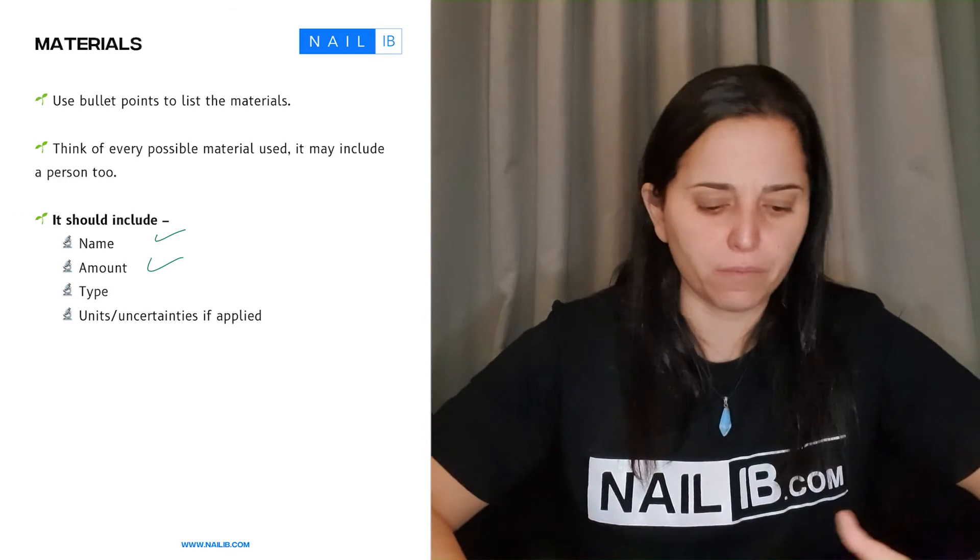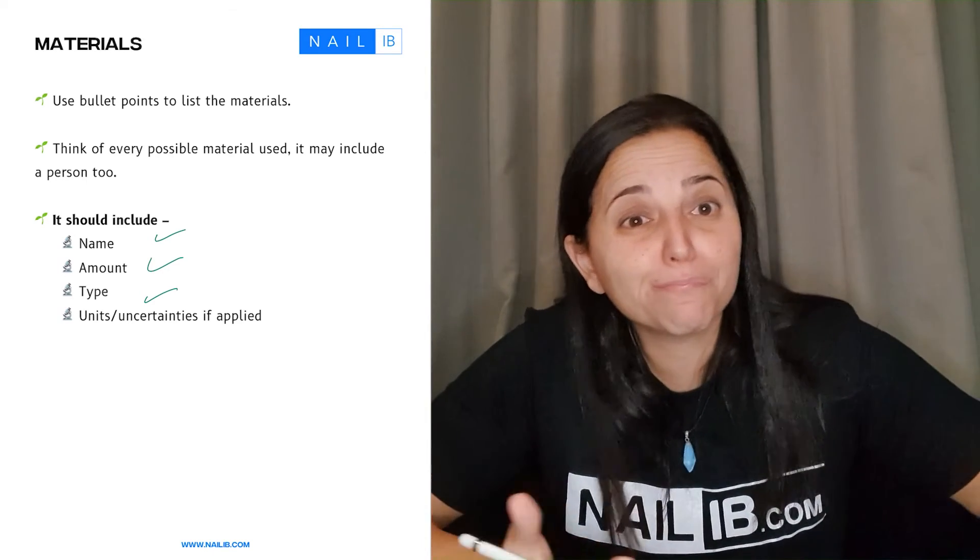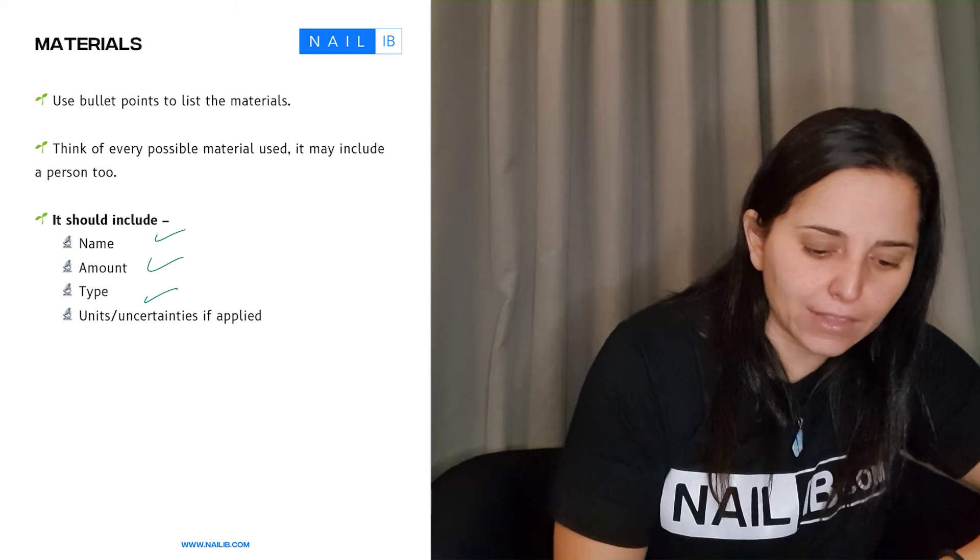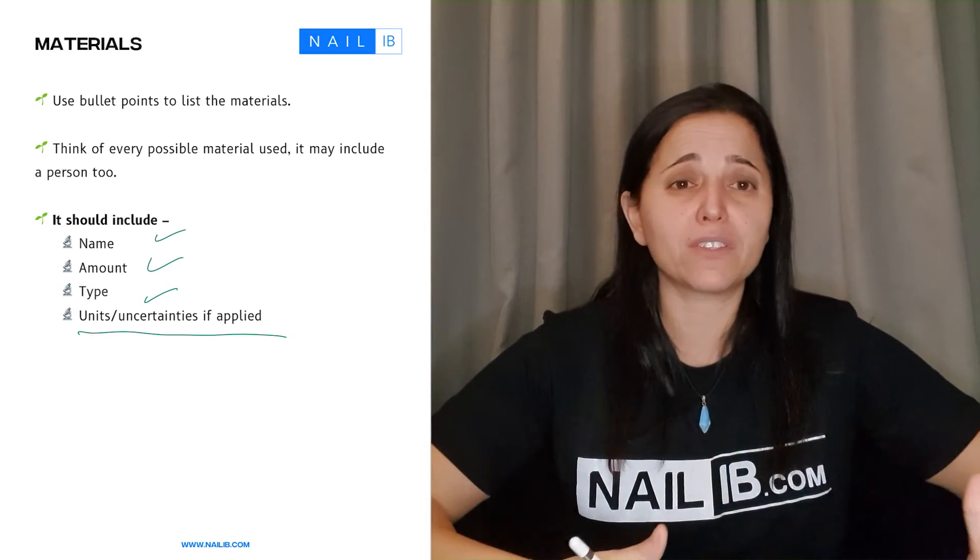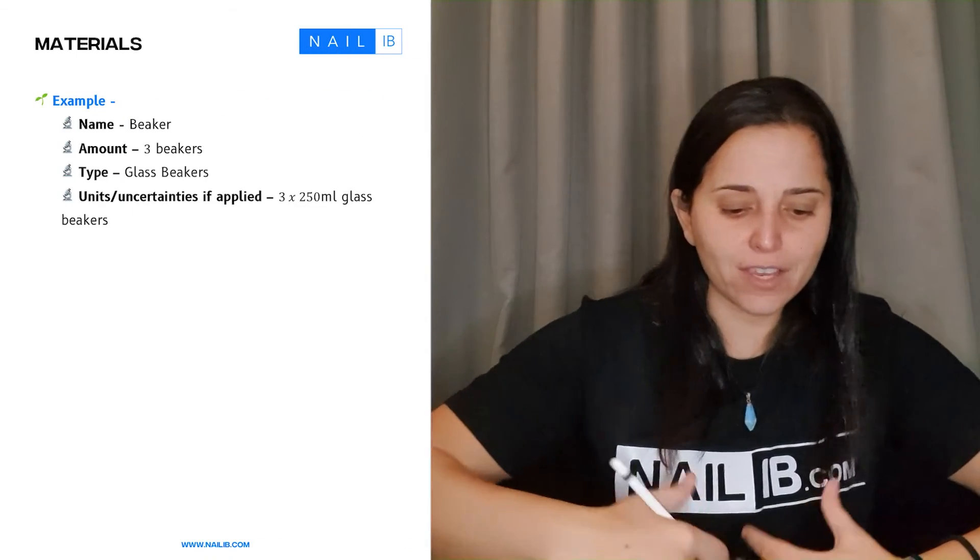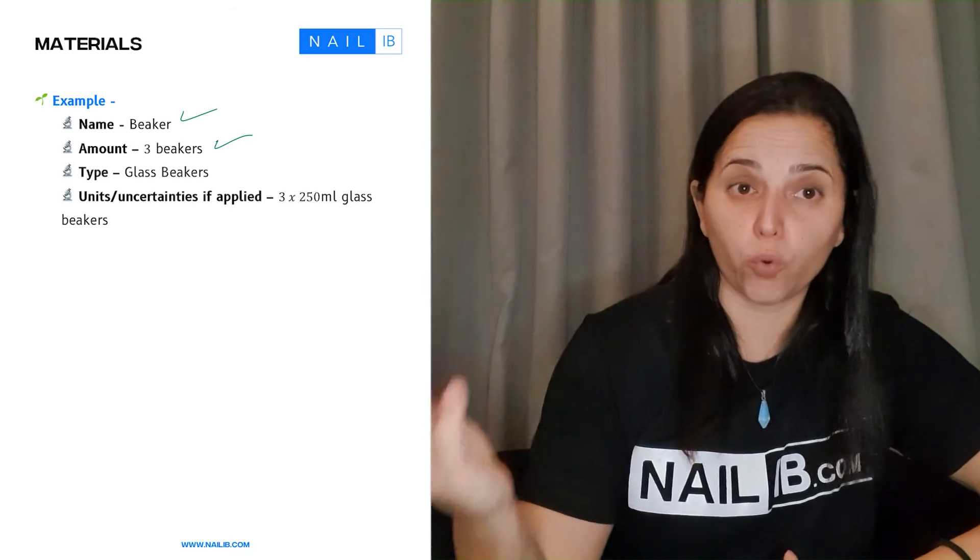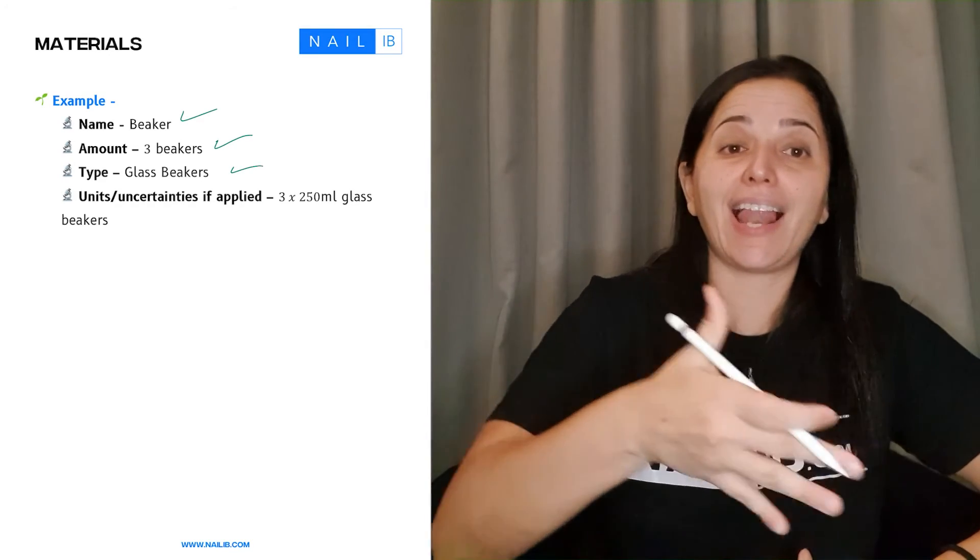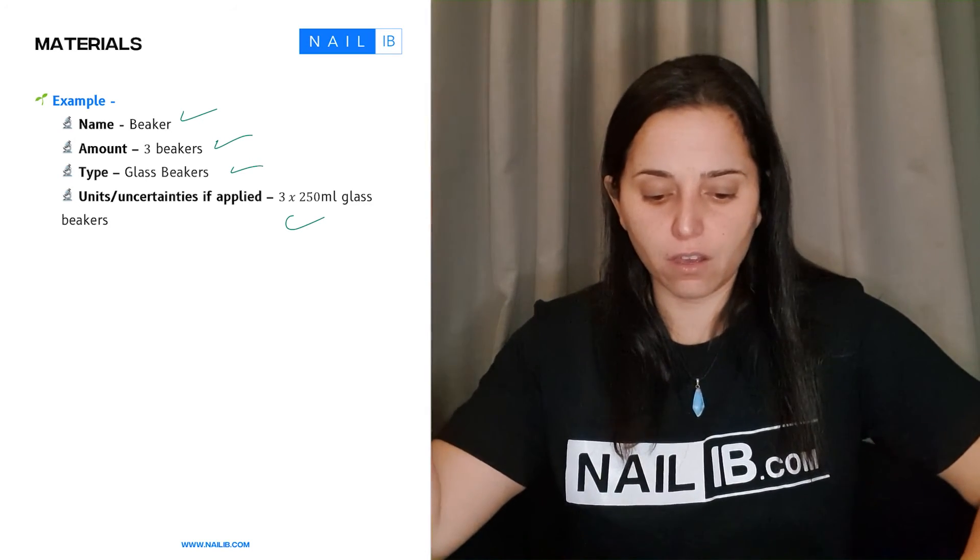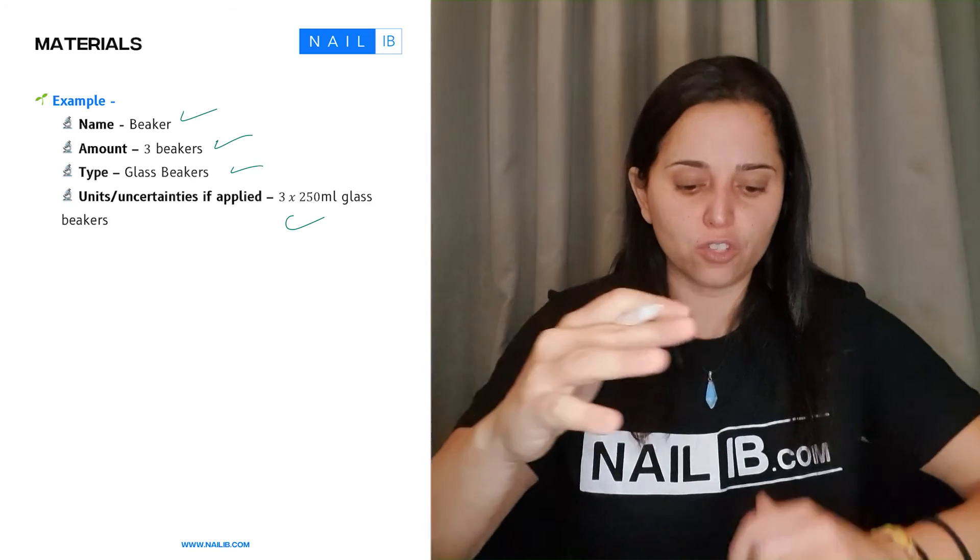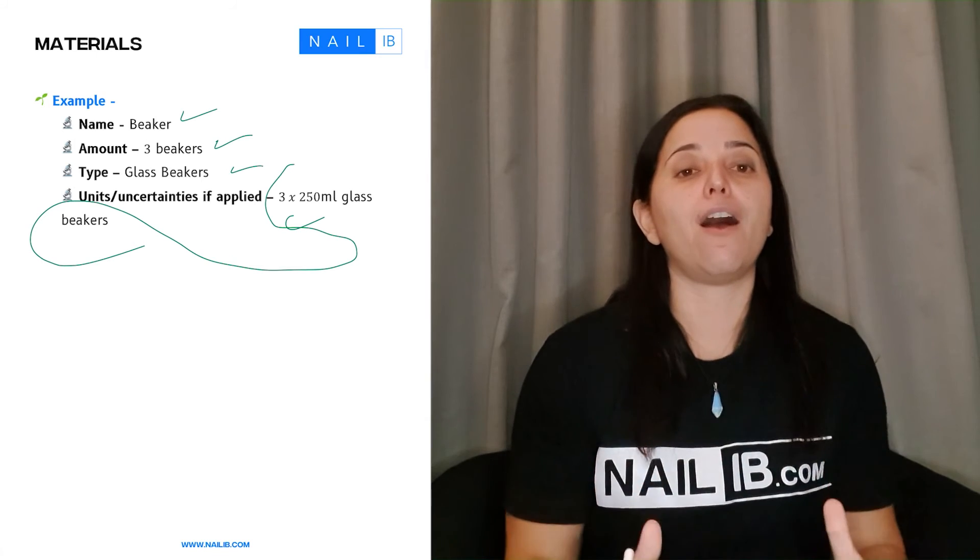The amount - how many of them there will be. The type - what is exactly the type of beakers that you're going to use, what type of sugar you're going to be using. And mention all the units and the uncertainties that are applied of the equipment they're using or the amounts you're doing. So here is an example of it: the name is beaker, the amount is three beakers, the type is glass beaker, and the units: three of 250 milliliters glass beakers. You see how detailed that is? This shows you that you have explained all of it.